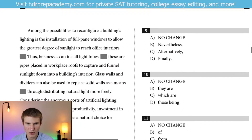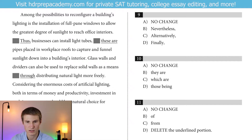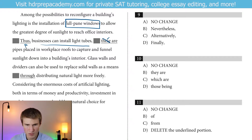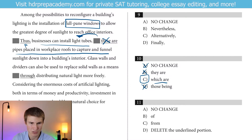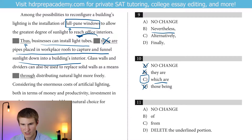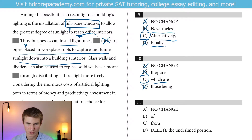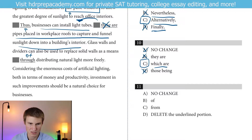Going to number 9 now. Among the possibilities to reconfigure a building's lighting is the installation of full pane windows to allow the greatest degree of sunlight to reach office interiors. Businesses can also install light tubes — and then 'these are' would have to be 'which are' to refer back to light tubes. We're not going to say 'they' — that'd be a comma splice. So we use 'which are,' a relative pronoun to refer back to light tubes. The transition here — we're talking about another option other than the full pane window, so we wouldn't say 'nevertheless' or 'thus' — we'd want 'alternatively.' For number 11, 'as a means of distributing natural light' — that's the correct preposition. Answer there would be B.